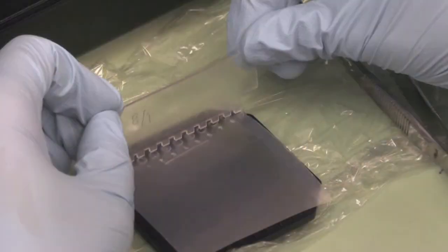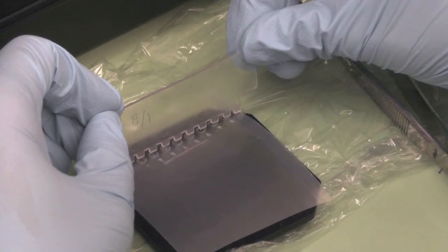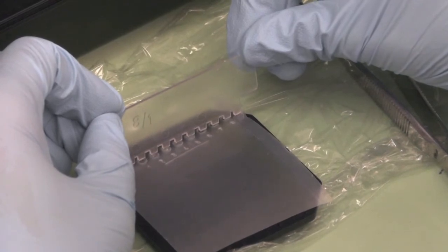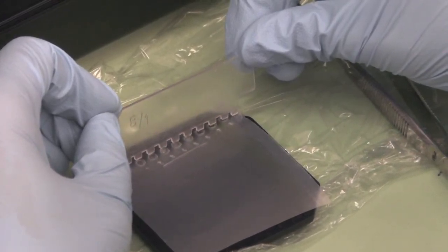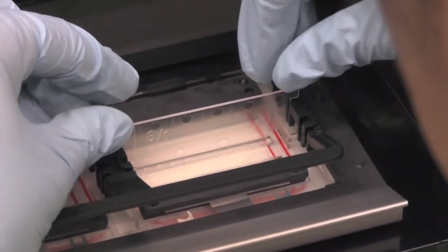Open the 8/1 sample applicator. This means 1 microliter for each of the 8 lanes. Gently touch the walls of the sample applicator to obtain samples. Gently put the comb in the middle slot. Make sure you do not touch the comb and press it down.